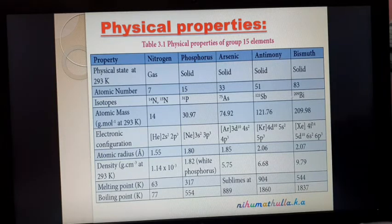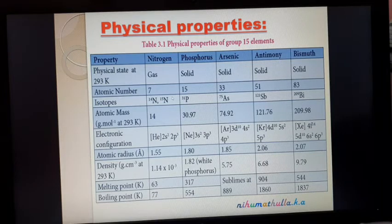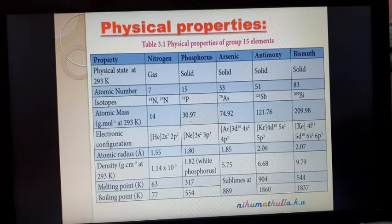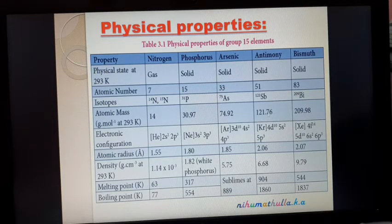Elements having the same atomic number but a different mass number are called isotopes. Atomic masses: nitrogen — 14; phosphorus — 30.97 (approximately 31); arsenic — 74.92 (approximately 75); antimony — 121.76 (approximately 121); bismuth — 209.